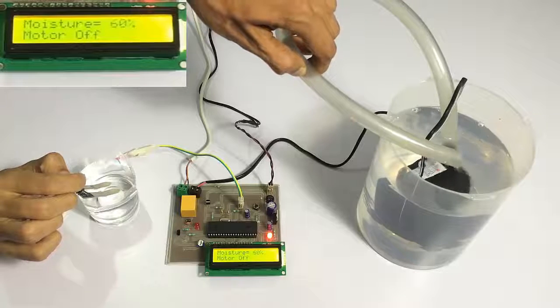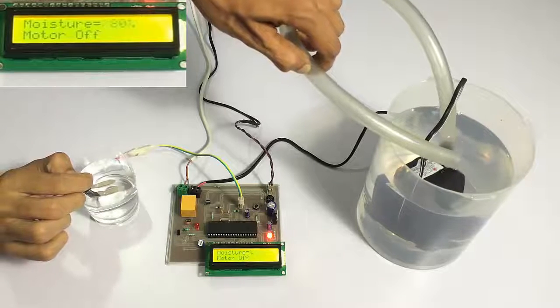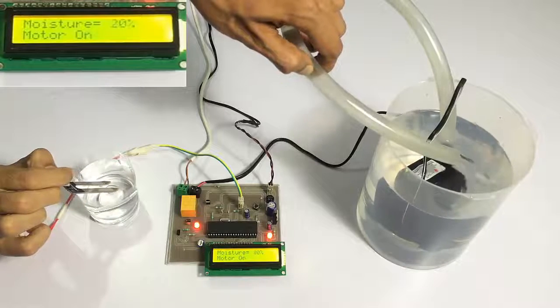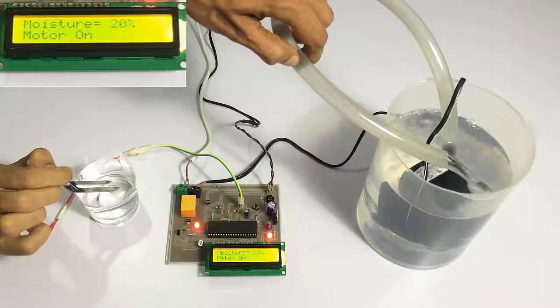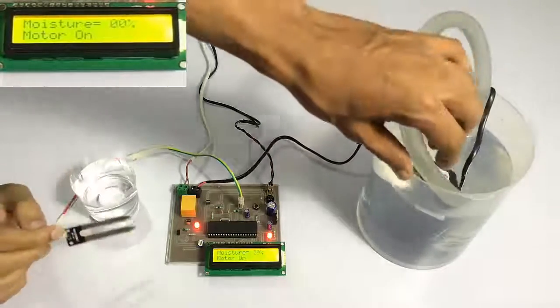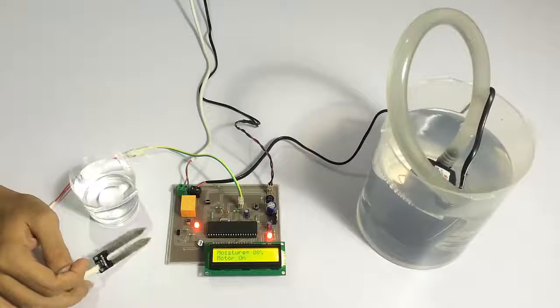As we insert the sensor into water and as you remove it, you can see it shows that it is 20%, and it has turned on the irrigation system automatically. This is how the system works. Thank you.